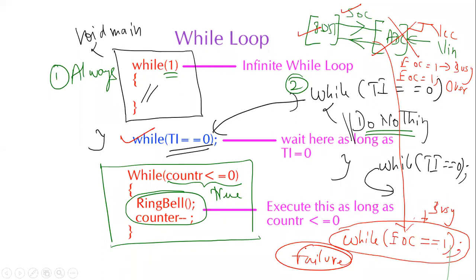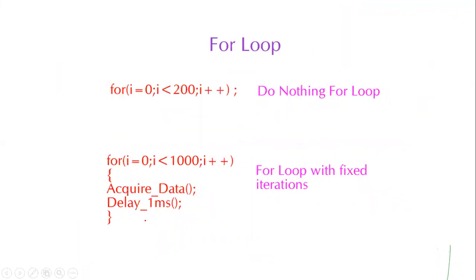The third flavor of while loop is the conventional while statement — while(condition) — as long as the condition is true, the body of the while loop gets executed. These are the three variants of the while loop.